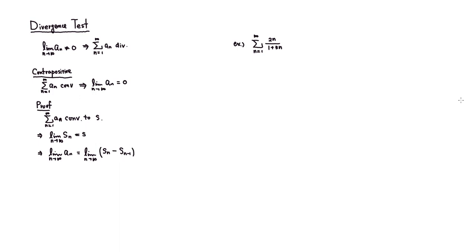We know that the limit of the partial sum S_n approaches S. Then the partial sum up to n minus 1 — since n is going to infinity anyway — is also going to approach S. So the limit of a_n equals S minus S, which is 0. So if the series converges, then the limit of a_n must be equal to 0.